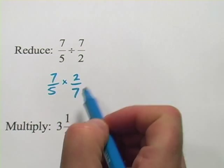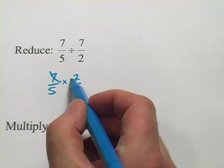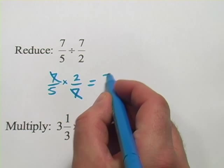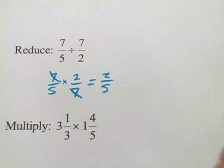And now, you probably have jumped ahead and seen this already, I've got a 7 on top and a 7 on the bottom, boom, they cancel. I have a 2 on the top, a 5 on the bottom. My answer is 2 fifths. All right, let's try one more.